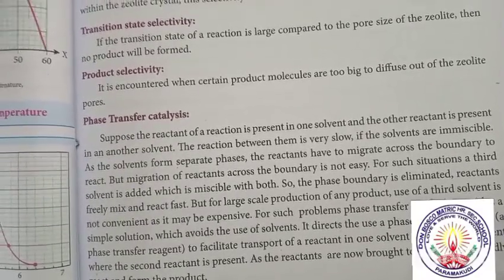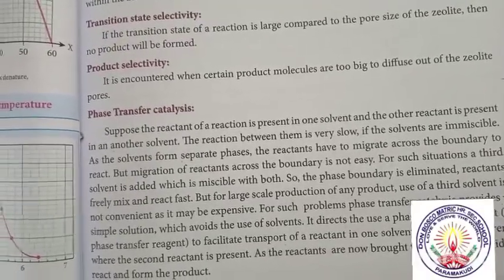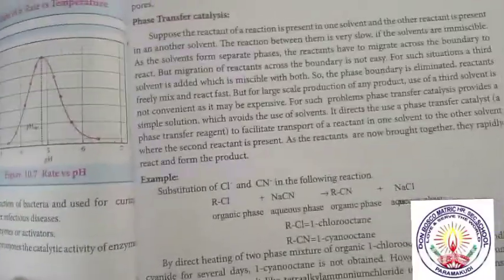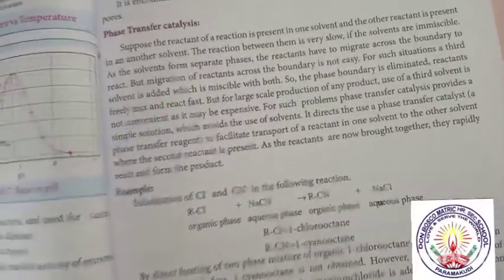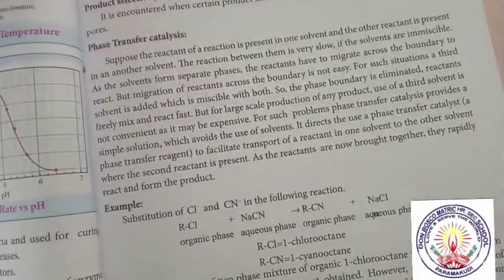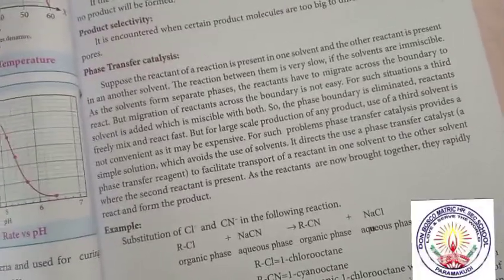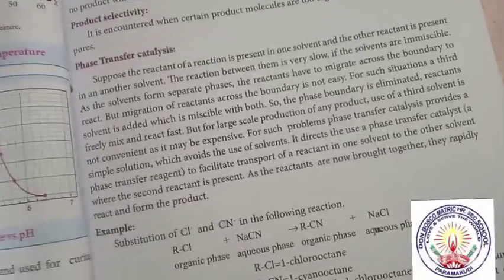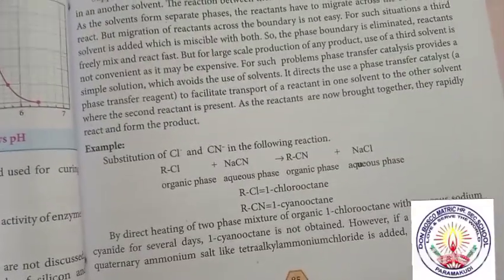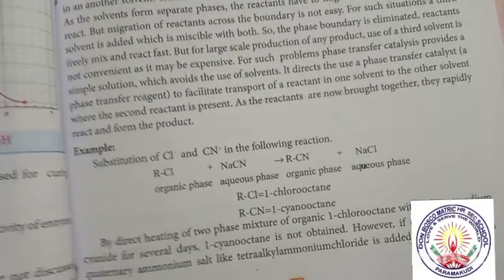Where the second reactant is present — as the reactants are now brought together, they rapidly react and form the product. Example: substitution — RCl plus NaCN gives RCN plus NaCl. RCl equals 1-chlorooctane, RCN equals cyanooctane.